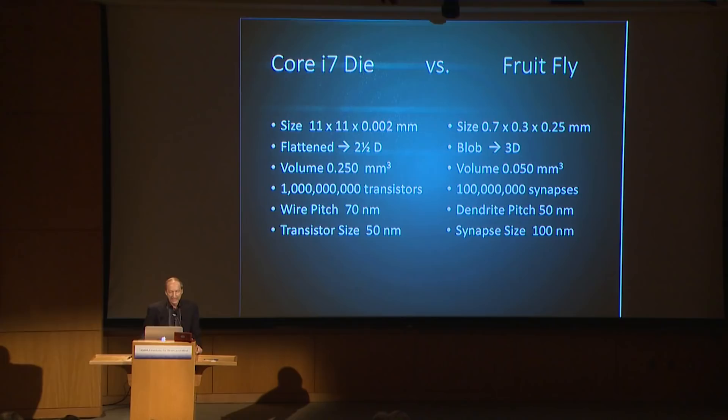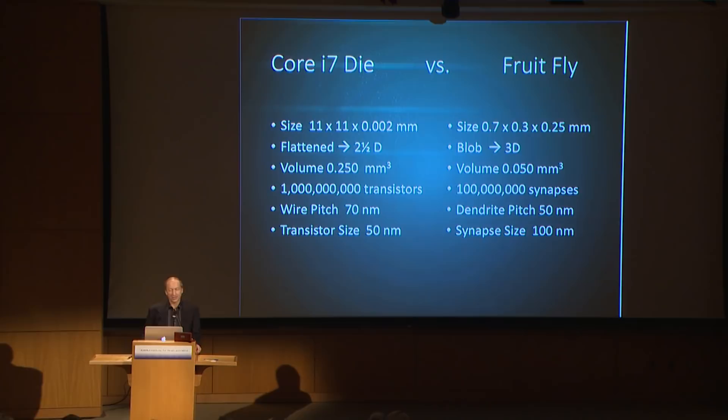A current processor is a flattened structure — about two and a half dimensions — with a volume under a millimeter. The fruit fly brain is a nice little blob also under a millimeter in size, not too different in volume. The number of transistors in modern processors is about a billion nowadays, which is a bit more than the fruit fly. Going back 10 years, the Pentiums had a comparable number. Wire size, transistor size, dendrite size, and synapse size are all in the tens of nanometers — very small.